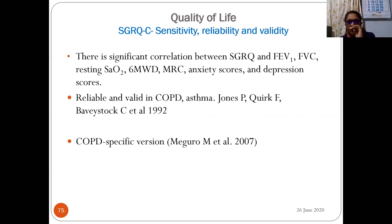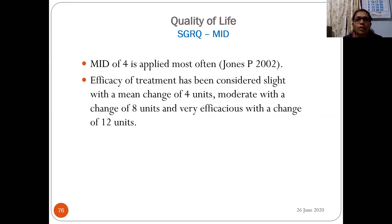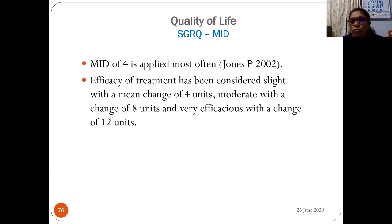SGRQ reliability and validity: significant correlations with FEV1, FVC, resting oxygen saturation, six-minute walk distance, MRC dyspnea index, and anxiety and depression scores. Reliable and valid in COPD and asthma. Minimal important difference (MID): a four-point change is most commonly applied. Slight efficacy is demonstrated by a mean change of four points, moderate improvement by eight units, and highly efficacious interventions may show change up to 12 units. The SGRQ is freely available and requires no training to administer.